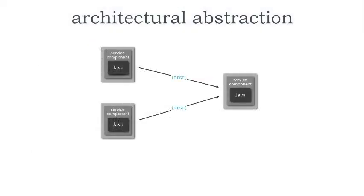When I talk about architectural abstraction, basically what we're doing architecturally is controlling change, where we're decoupling our systems, applications, or services. For example, as you can see here, everything we have in all these services is written in Java. But when I change that right-hand service and rewrite it to C-sharp using REST, what changes? And the answer is nothing. And so this forms this architectural abstraction.